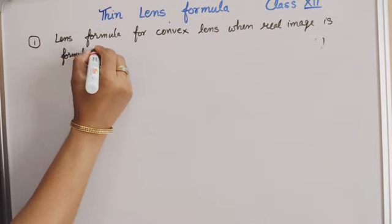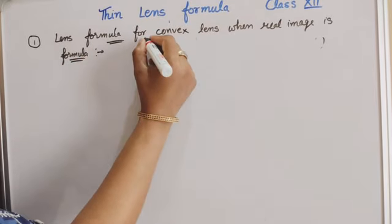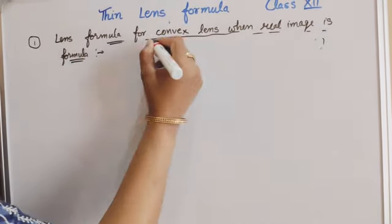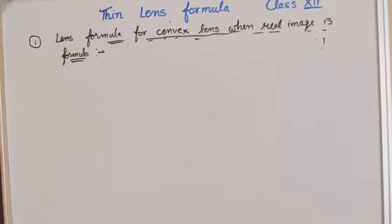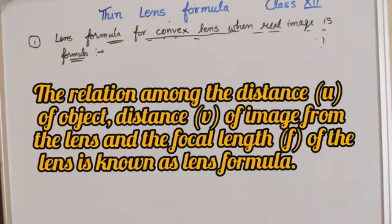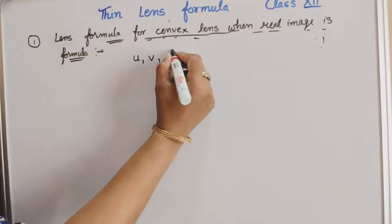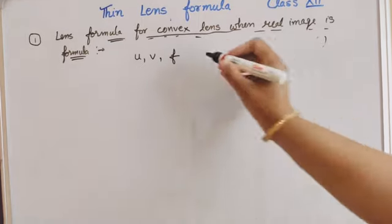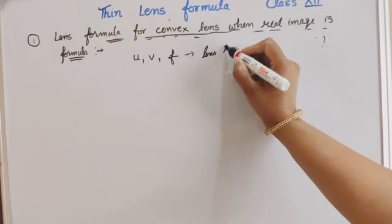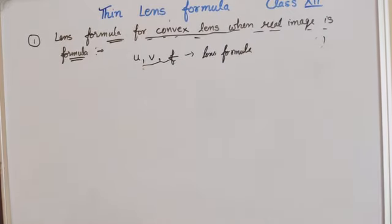Our first case is the convex lens. The relation among the distance of the object (U), distance of the image (V), and the focal length (F) of the lens is known as the Lens Formula. Consider a convex lens of focal length F.